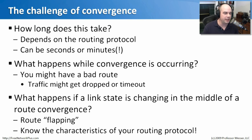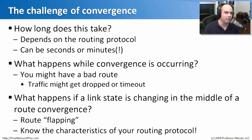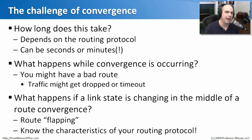If a link state keeps changing in the middle of a convergence — a route goes up, your router recognizes it, then while making the change it goes down, then up, then down — your route begins flapping, happening over and over. You may find your routes never get updated because a route keeps flapping up and down. You need to know the characteristics of your routing protocol and how it reacts when flapping takes place. There are timers in almost every routing protocol that let you adjust how long it waits for certain things, making the routing protocol work better or worse for your use case.